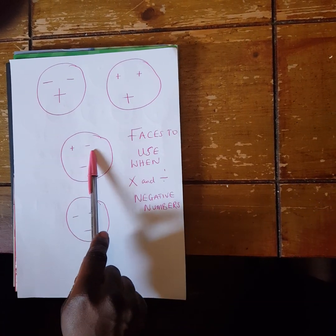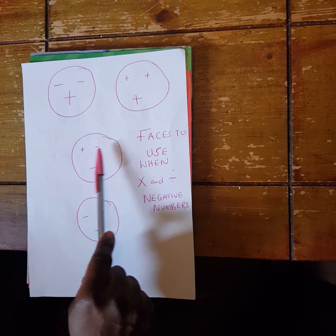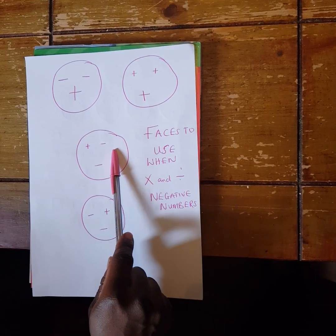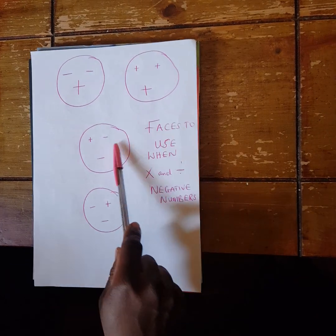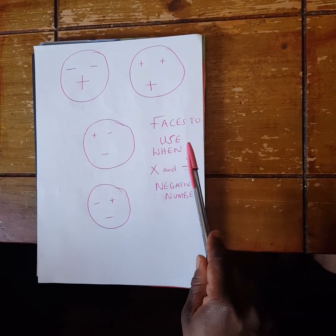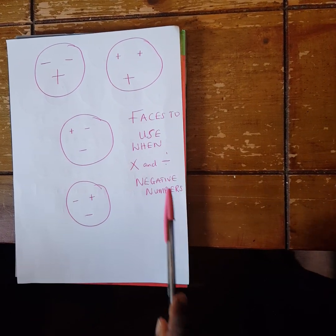If you have two different signs, and you are multiplying or dividing them, you will have a negative as your answer. So it is very important you use these faces when you are multiplying or dividing negative numbers.